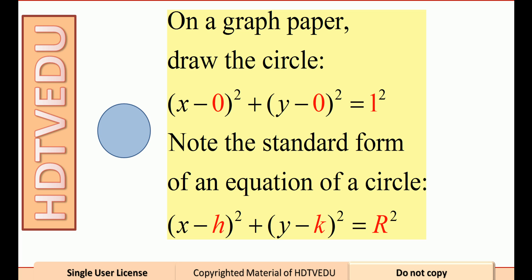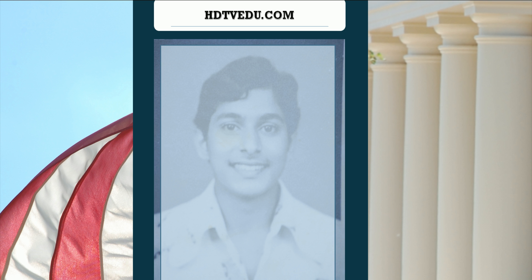What is h, k? The center. Why do you have h and k? It is on a graph paper — you always have x and y. x minus h squared plus y minus k squared equals r squared.